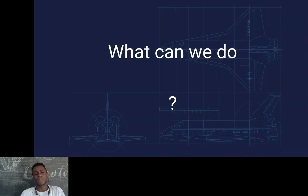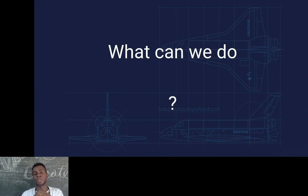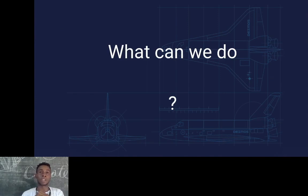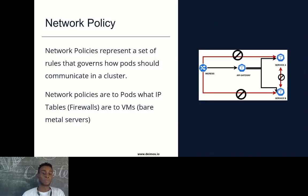Another critical risk is data exfiltration. When an attacker compromises a pod, they can export data to another location. Based on what data they have access to, that can be very dangerous — for example, exporting user information or credit card details. So what can we do? We want to reduce the attack surface and limit what an attacker can do once they compromise a pod. This is essentially what this talk is about.